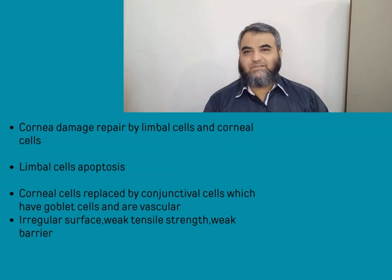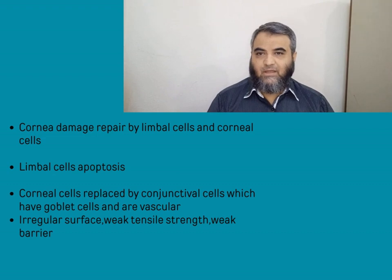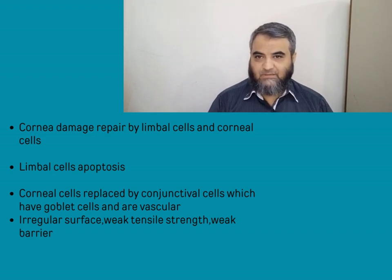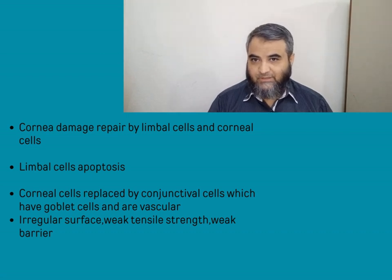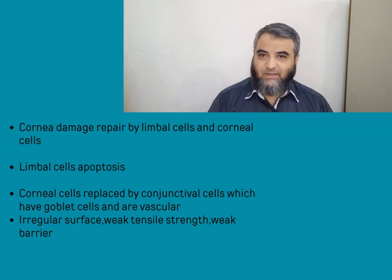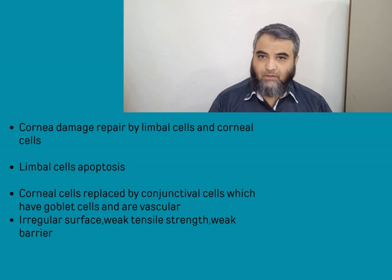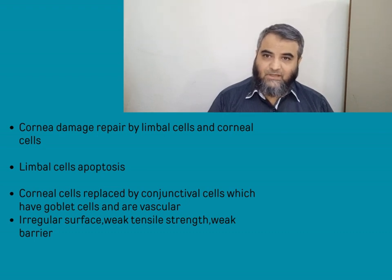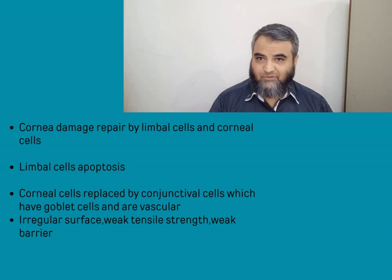Whenever there is a corneal injury, the epithelial cells are replaced by the limbal stem cells and that area is usually healed. But sometimes there is a process of apoptosis in the limbal stem cells and they also undergo damage and death. In such circumstances, sometimes the conjunctival cells move over there to cover up the defect.